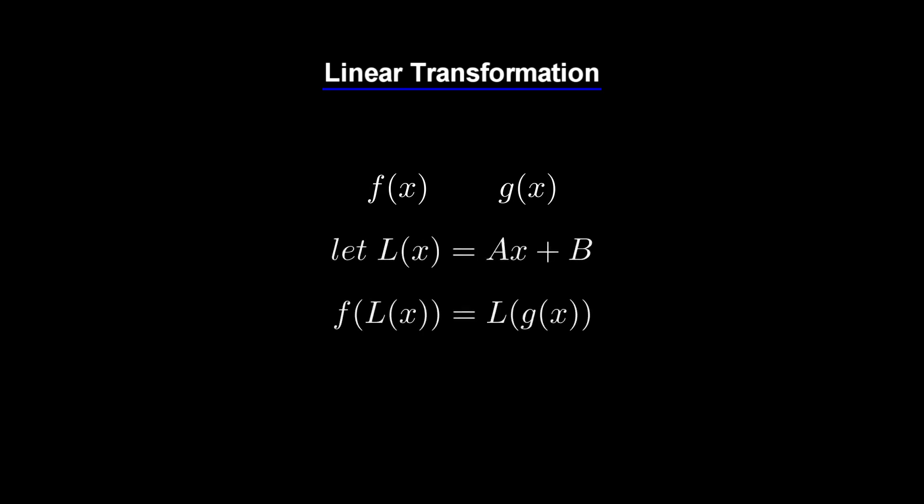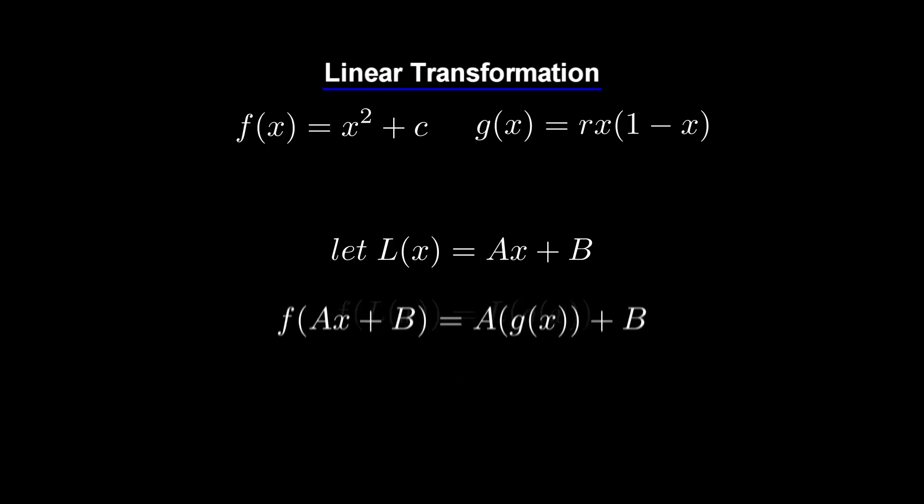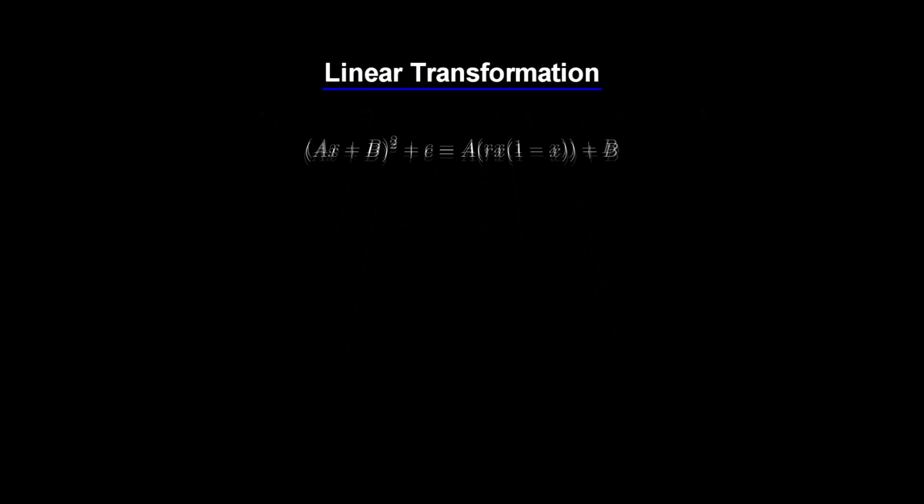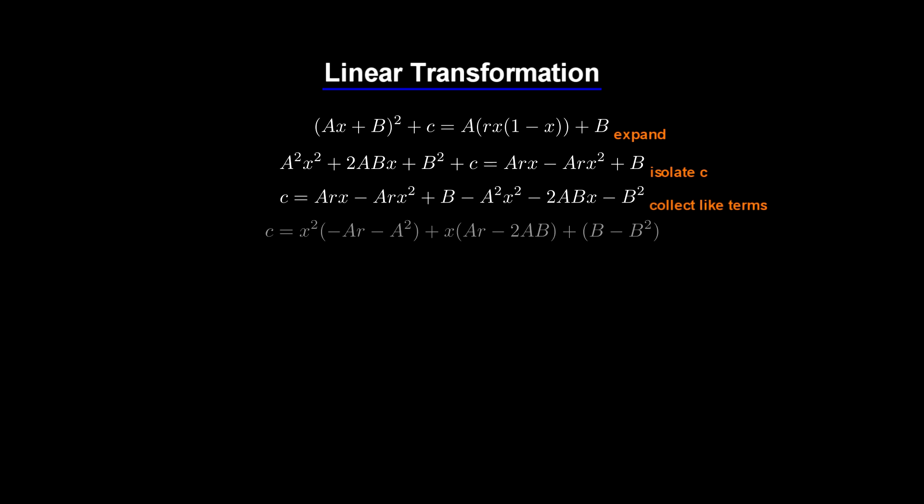The way we can show that one function is a linear transformation of another is by showing that this criteria is met. Remember the Mandelbrot function and the logistic map equation, let us substitute in the corresponding values. By simplifying this down and collecting like terms, we can find a and b, and therefore our value c.